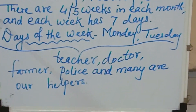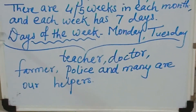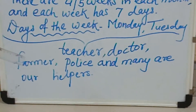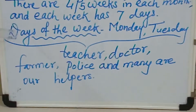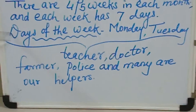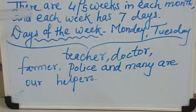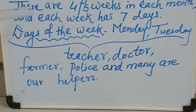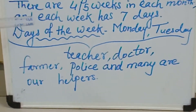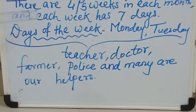Each week has 7 days. These 7 days are called the days of the week. This also you have learnt in your previous class. The days of the week are Monday, Tuesday, Wednesday, Thursday, Friday, Saturday, and of course the one you love most — Sunday.